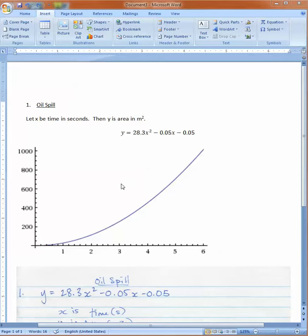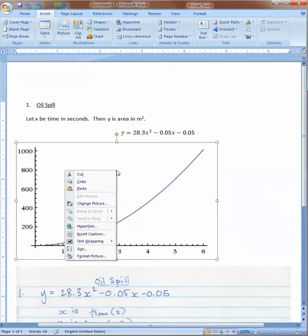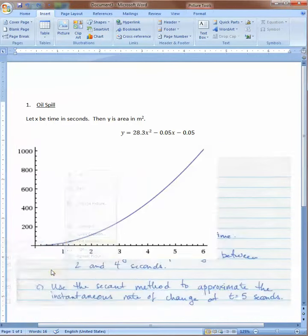Once you've inserted the picture and put in your graph, we'd like to add some axis labels. I generally right-click and say in front of text.